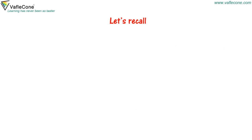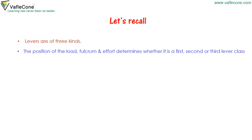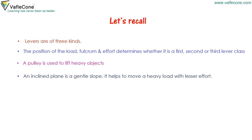Now let's recall. Levers are of three kinds — the position of the load, fulcrum, and effort determines whether it is a first, second, or third class lever. A pulley is used to lift heavy objects. An inclined plane is a gentle slope that helps to move heavy loads with lesser effort. A screw has grooves and holds things together. A wedge has two inclined planes.